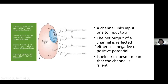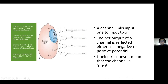When we talk about electrical potentials recorded in the EEG, we record based on channels. A channel takes input from one electrode to another electrode. The net output is reflected as a negative or positive potential — negative gives an upward deflection, positive gives a downward deflection. A phase reversal between channels shows the area of maximum potential. An isoelectric line doesn't mean the channel is silent; it means the two electrodes have the same potential and cancel out.